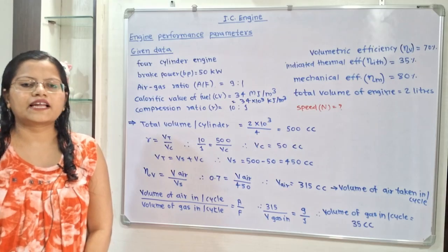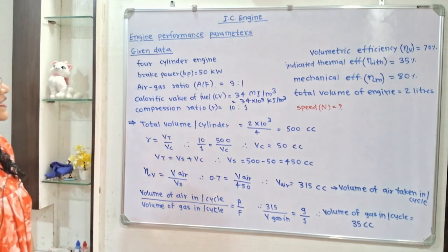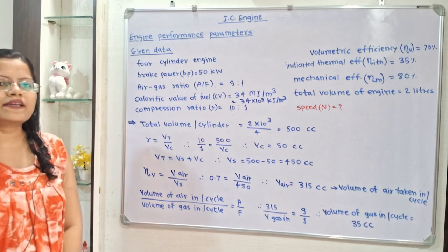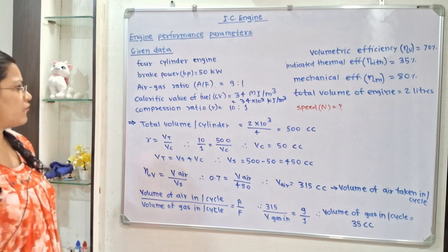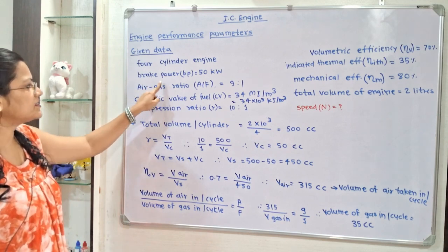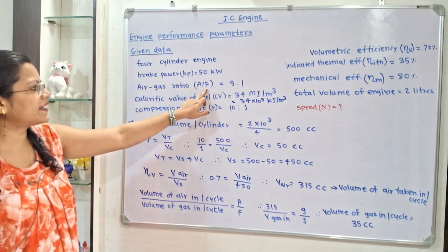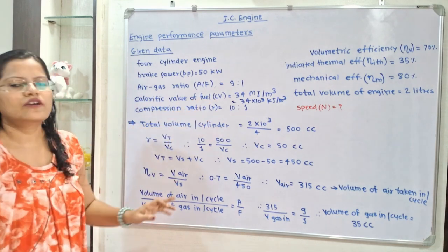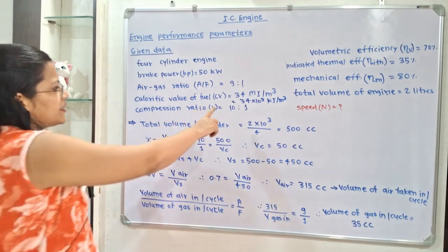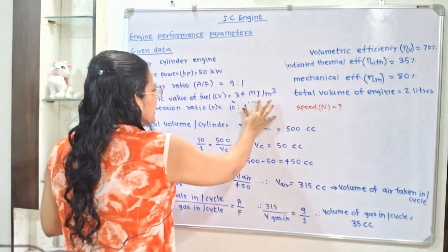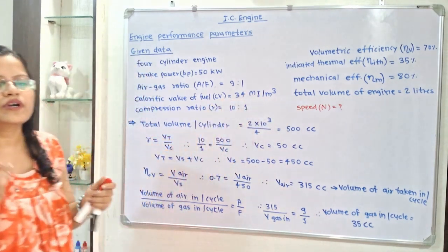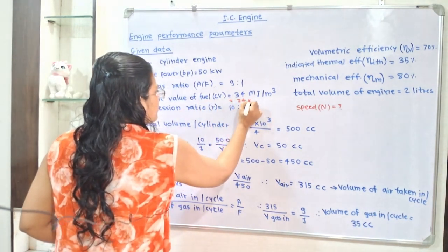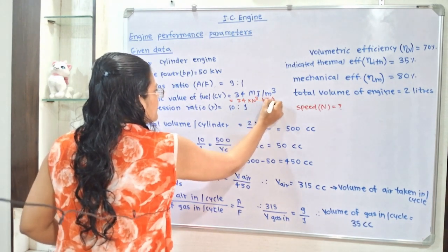Let us understand the given data. This is a 4-cylinder engine, so number of cylinders is equal to 4. Brake power BP is equal to 50 kW. Air to gas ratio — here gas is used as a fuel, so A/F ratio is 9:1. Calorific value of fuel is given as 34 MJ per meter cube, but the standard unit is kJ per meter cube, so we write it as 34 × 10³ kJ per meter cube.